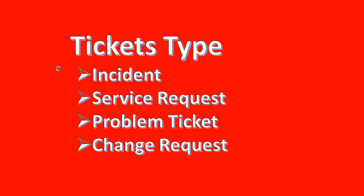The last type is a change request. When we are doing any kind of activity that is going to affect the environment — whether it is production or development — we create a change request. For example, if the UNIX team wants to do OS patching, they will raise a change request and approval will be taken from the owner of the server. Similarly, from the database side, if we are doing database-level patching, we raise a change request and take approval from the database owner.